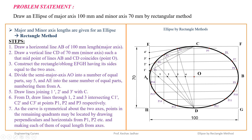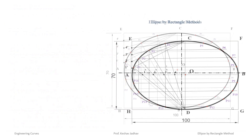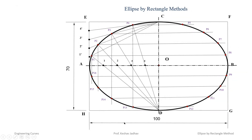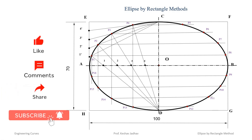Draw major axis AB and minor axis CD using center lines. The dimensions are: major axis 100 mm and minor axis 70 mm. In this way we can draw an ellipse by the rectangle method, also called the oblong method. Thank you.